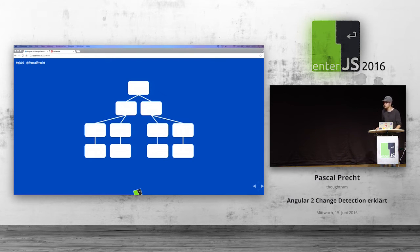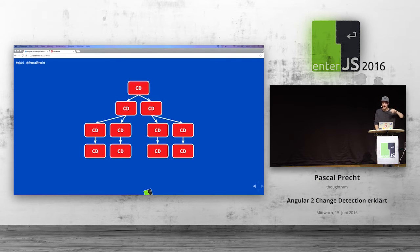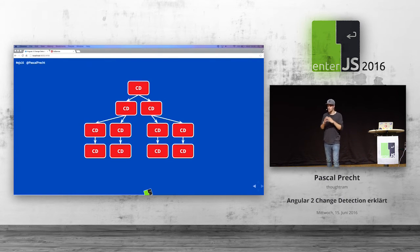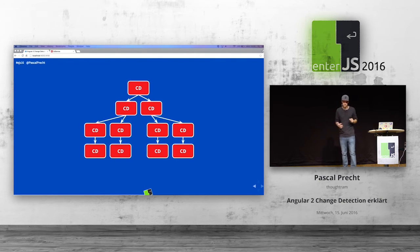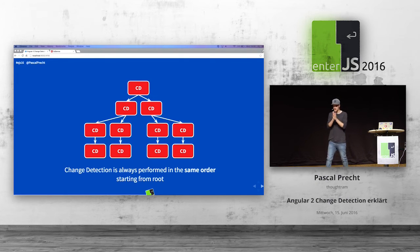There are multiple change detectors — one for each component — and this turns out to be super great because now we can configure per component how change detection is performed. Change detection is always executed from top to bottom for all components. This tells us where data comes from — data always flows from top to bottom. Another nice thing is that it gets stable after a single pass. There's no digest cycle anymore.